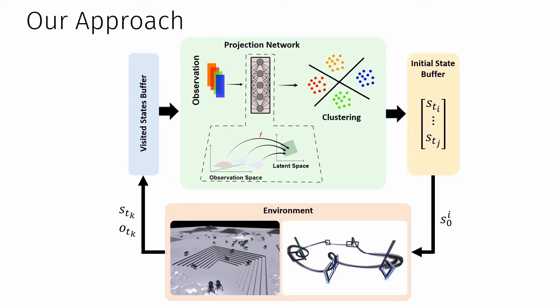States close to the cluster center are then added to an initial state buffer, which is used during the rollout phase to initialize the robot in the environment. The strategic initialization of the agents in the environment greatly diversifies the robot experience leading to enhanced training performance.